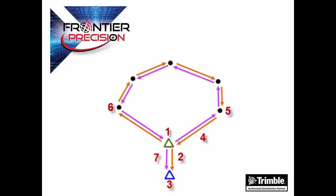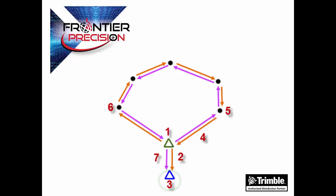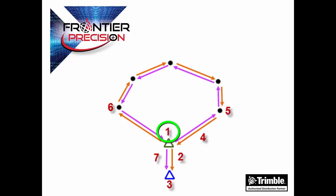Following is an example of a typical closed-loop traverse in which the traverse starts and ends on the same point. The start station 1 is on a known point with a backsight to a known coordinate or azimuth, number 3. The start station then foresights number 4, the first intermediate station number 5, and each intermediate station in turn backsights the previous station and foresights the next station. The last intermediate station number 6 foresights the end station, which is the same as the start station, number 1. The end station then backsights the last intermediate station and foresights the known point, number 3, that was backsighted from the start station.